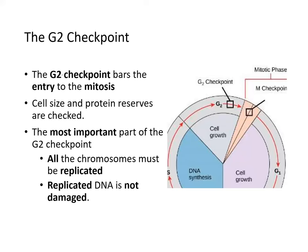The G2 checkpoint bars entry into mitosis. Remember, the cell is currently at 4N or tetraploid. Cell size and protein reserves are checked, but the most important part of the G2 checkpoint is making sure that all chromosomes have been replicated and that the replicated DNA is not damaged.